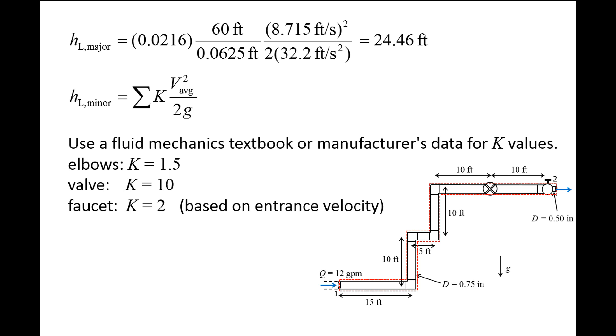For this problem, we will assume the elbows have loss coefficients of 1.5, the wide open globe valve has a loss coefficient of 10, and the faucet has a loss coefficient of 2. Notice that the inlet to the faucet has a diameter of 3/4 inch, while the outlet of the faucet has a diameter of 1/2 inch. This means that the average flow speed changes from the faucet's inlet to the faucet's outlet. A similar situation occurs with nozzles, diffusers, sudden contractions, and sudden expansions.